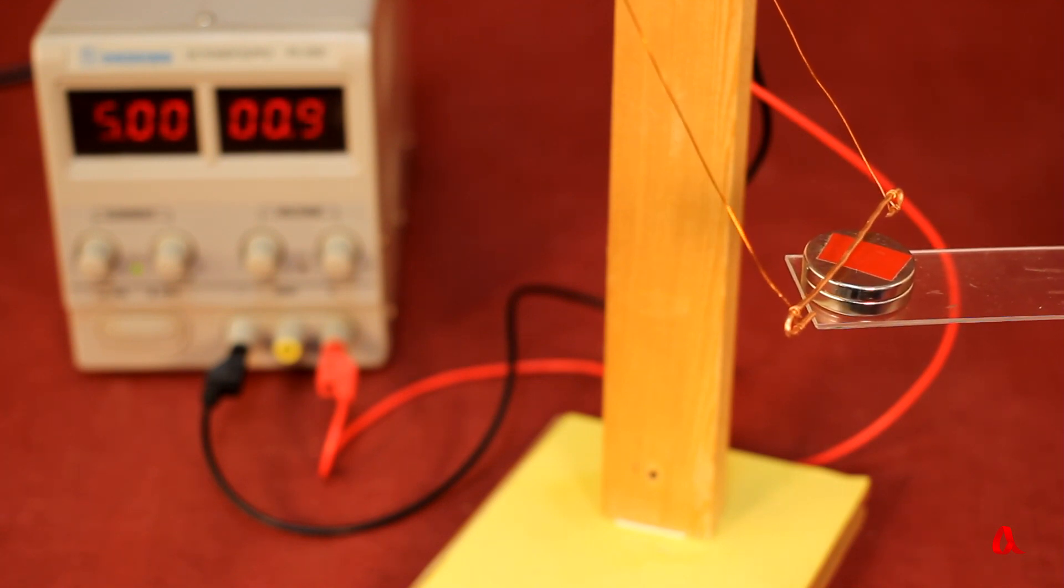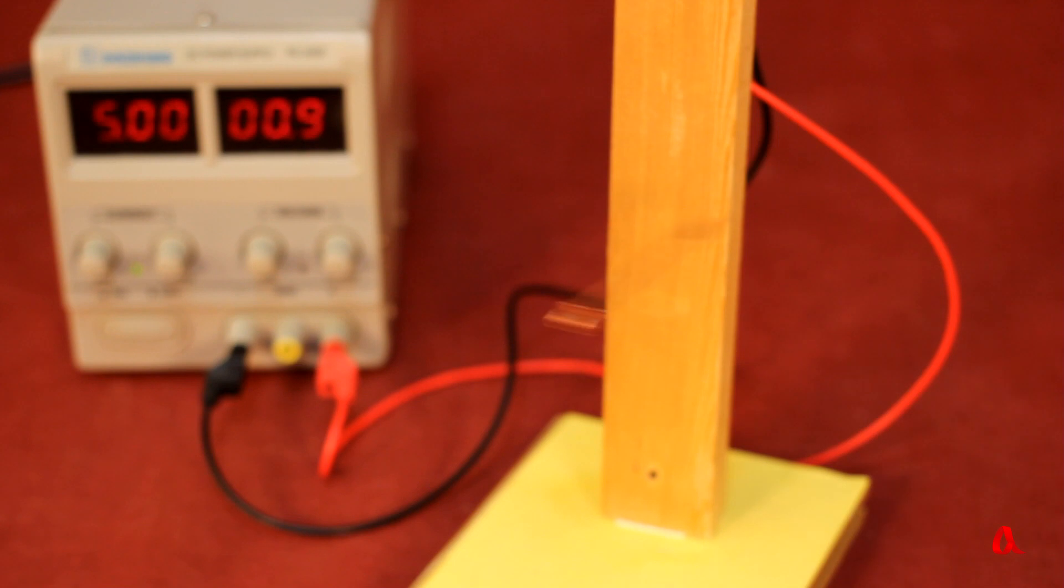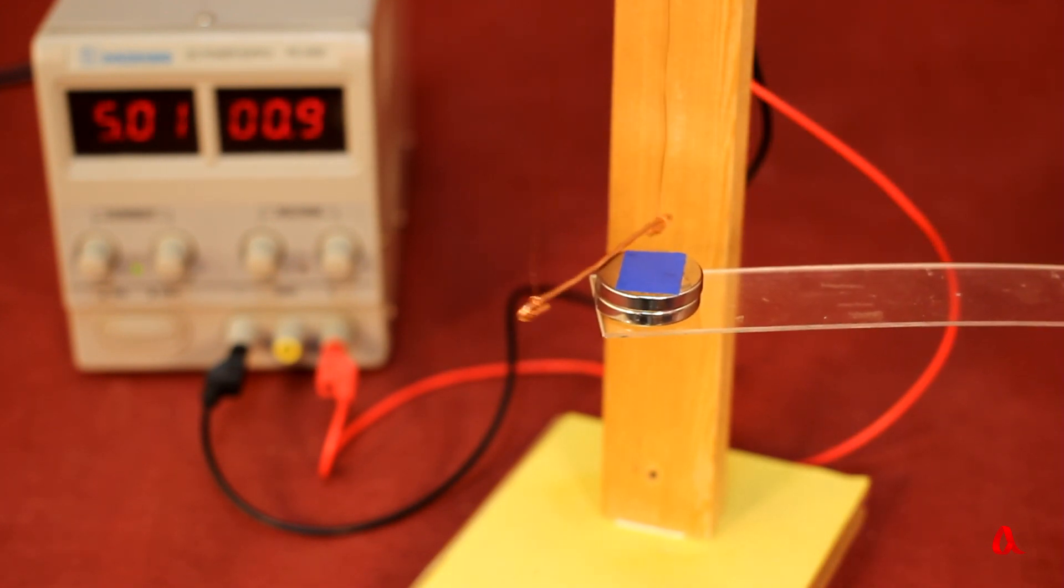Let us turn the magnet the south pole up. The direction of the magnetic field has changed to the opposite, and now the wire is deflecting to the left.